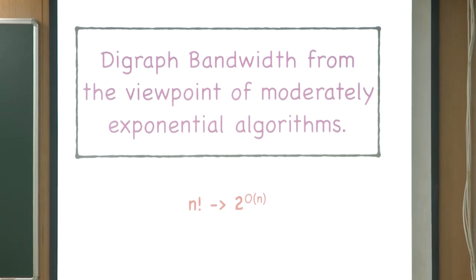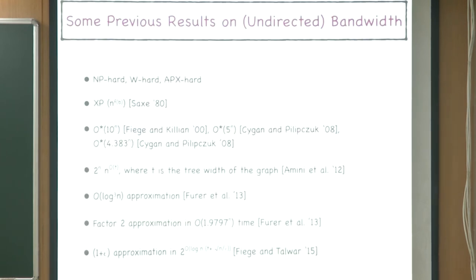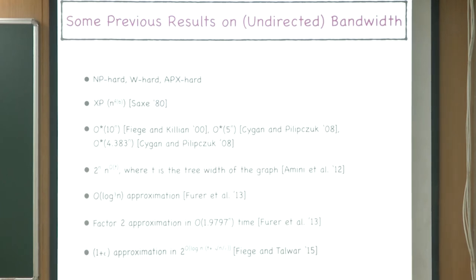Before describing our results, let me give a picture of the literature on undirected bandwidth so we see how our results fit the bigger picture. Undirected bandwidth has a rich literature. To begin with, this problem is NP-hard, W-hard, and APX-hard — and this hardness carries forward to digraph bandwidth, which clearly generalizes it.